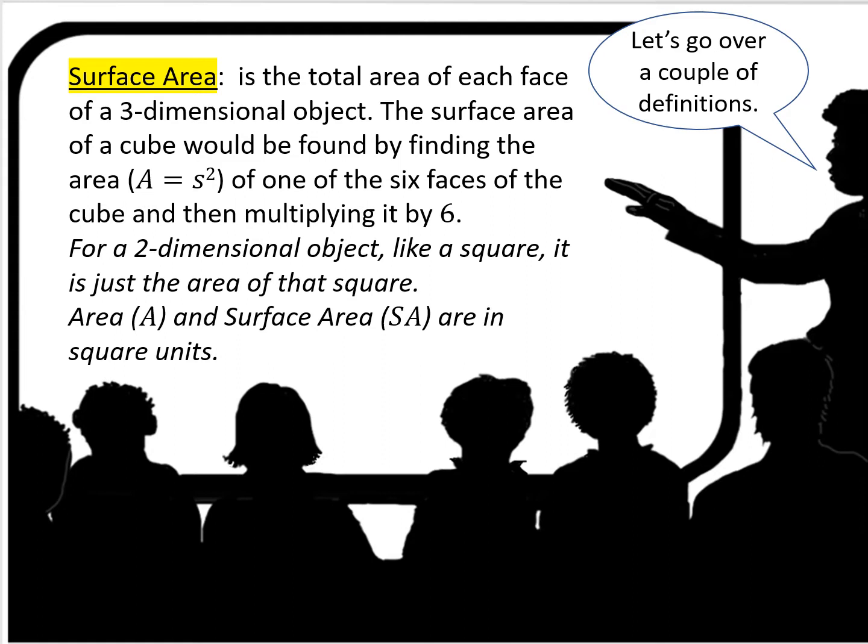For a two-dimensional object like a square, it's just the area of that square. Area and surface area are in square units. So if one of your sides was in centimeters, then your area and/or surface area would be in centimeters squared.